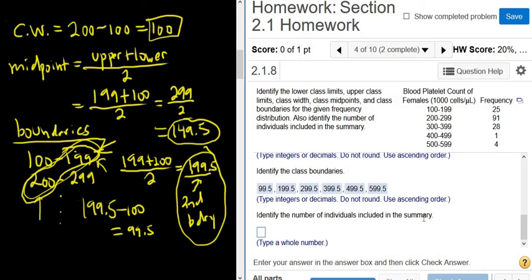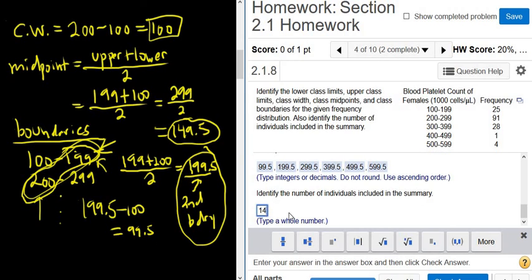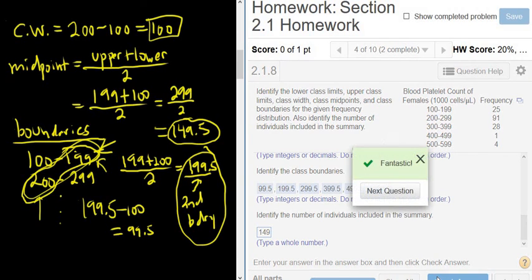Identify the number of individuals included in the summary. So to do that, all we have to do is add up the frequencies. So it'll be 25 plus 91 plus 28 plus 1 plus 4. So that's 149. So let's try it. So 149. Check answer. And that's it. I hope that helped.